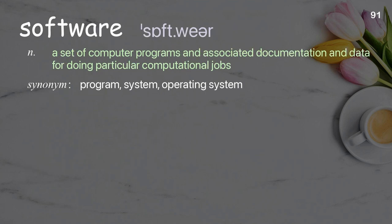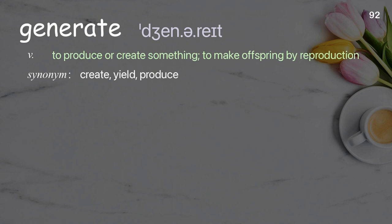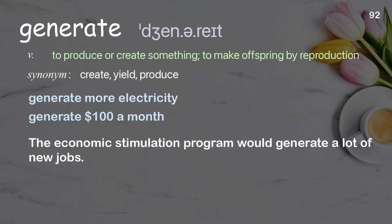Software: a set of computer programs and associated documentation and data for doing particular computational jobs. The company specializes in both hardware and software. Generate more electricity, generate $100 a month. The economic stimulation program would generate a lot of new jobs.